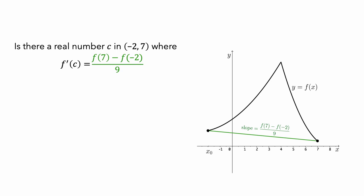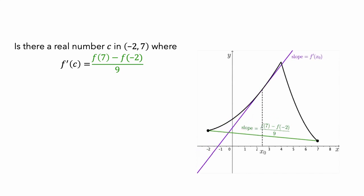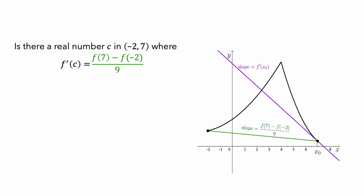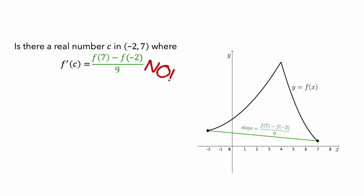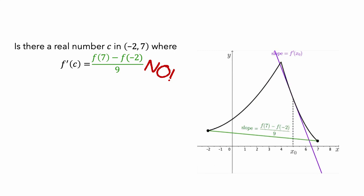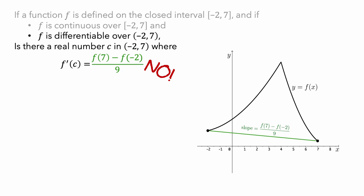As we did with the last function, let's start looking at the tangent lines at the left endpoint of the interval. The slope of this purple tangent line doesn't match the slope of the green secant line. Let's increase the value of x0 and see if we get a match. There weren't any values of x0 where the slope of the purple tangent line appeared to match the slope of the green secant line — there wasn't a real number c in the interval where f prime of c was equal to the average rate of change. This happened because this function has a cusp right around x equals 4, so it wasn't differentiable there. This is what prevented the tangent lines from being parallel to the secant line, and differentiability on the interval is one of the conditions required by the mean value theorem.